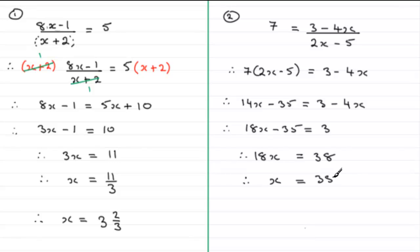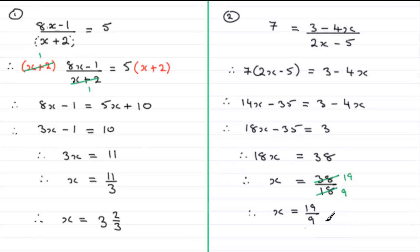We can simplify 38 over 18 by dividing top and bottom by 2: 38 divided by 2 is 19, and 18 divided by 2 is 9. So x equals 19 over 9. You could leave it like that or express it as a mixed fraction: 9 goes into 19 twice with 1 left over, so that's 2 and 1 ninth.